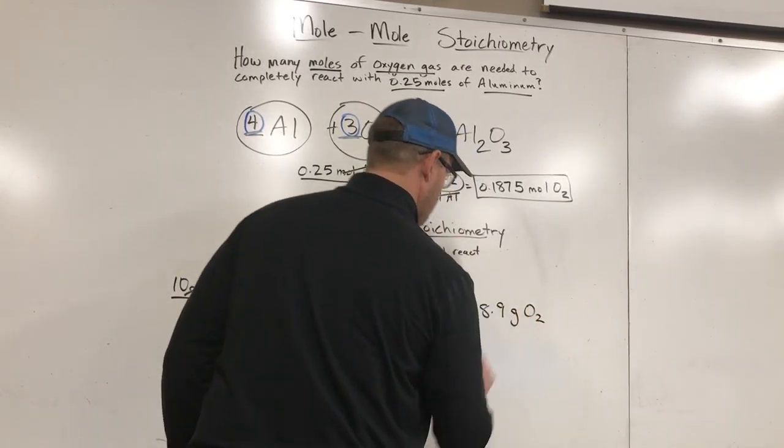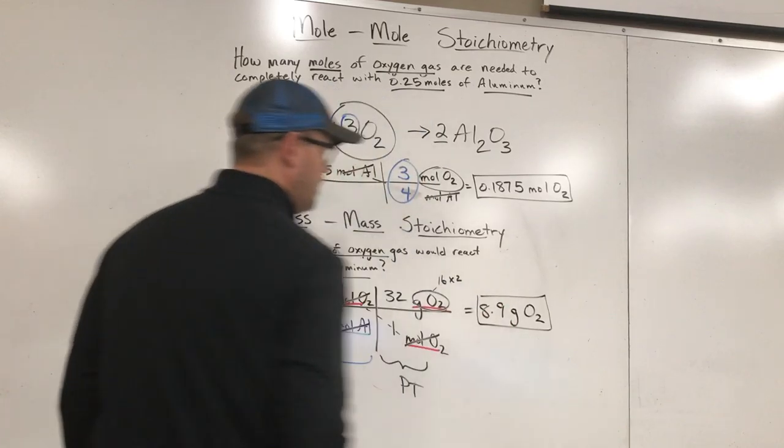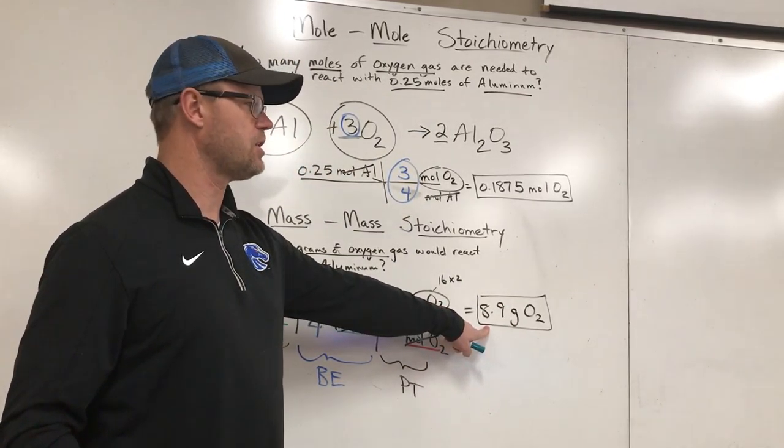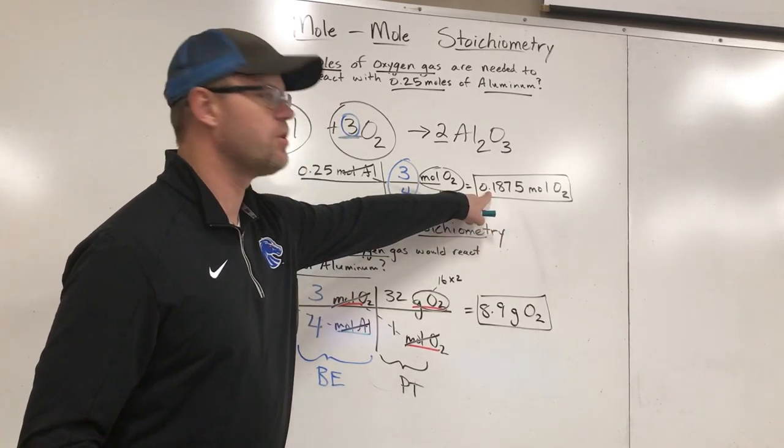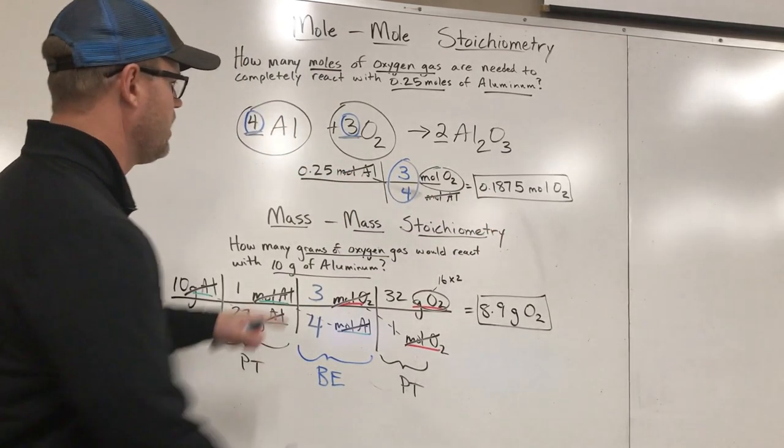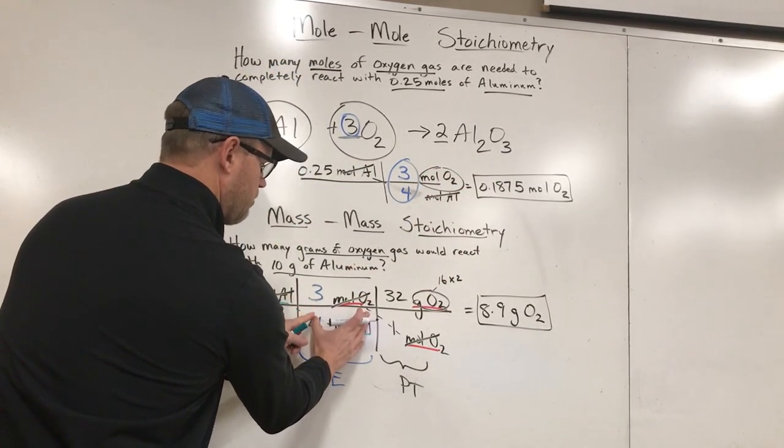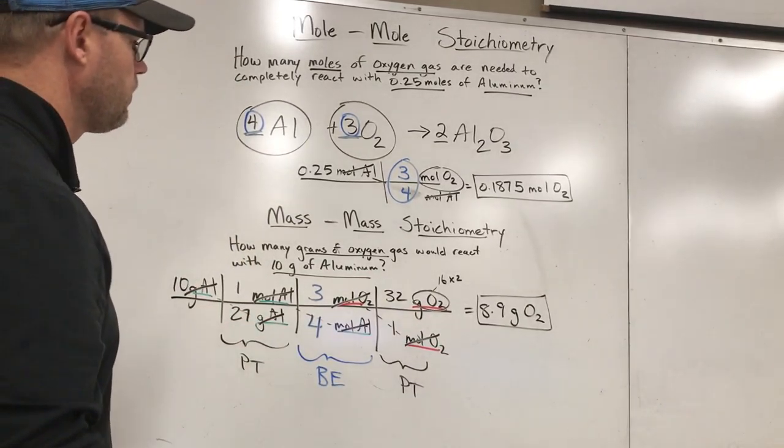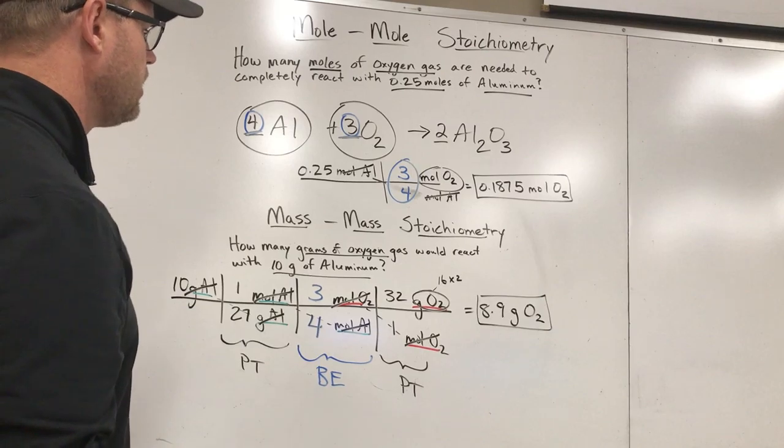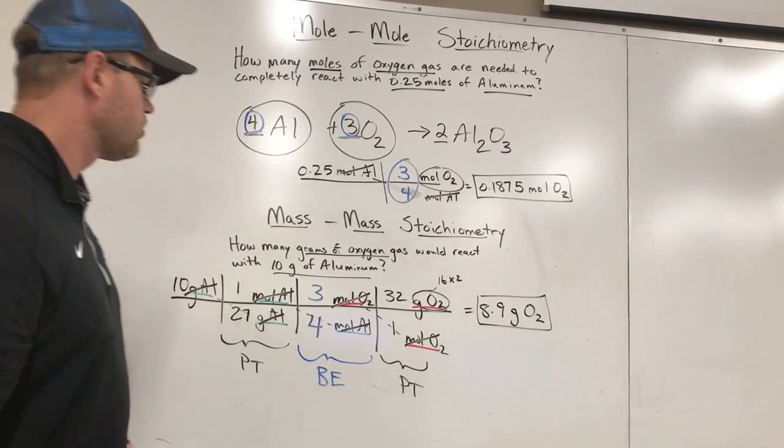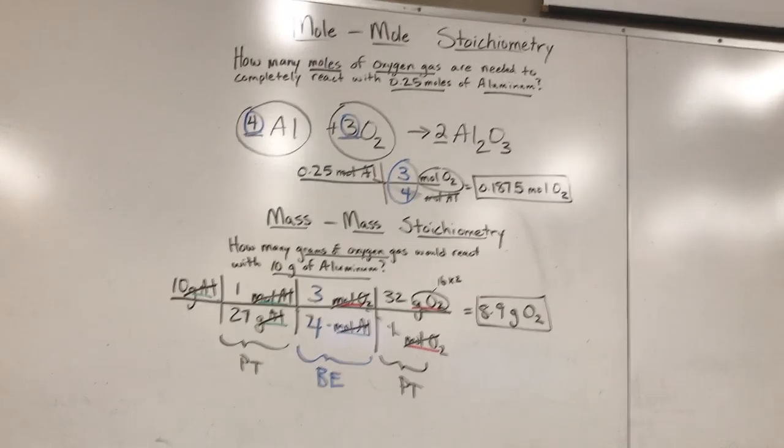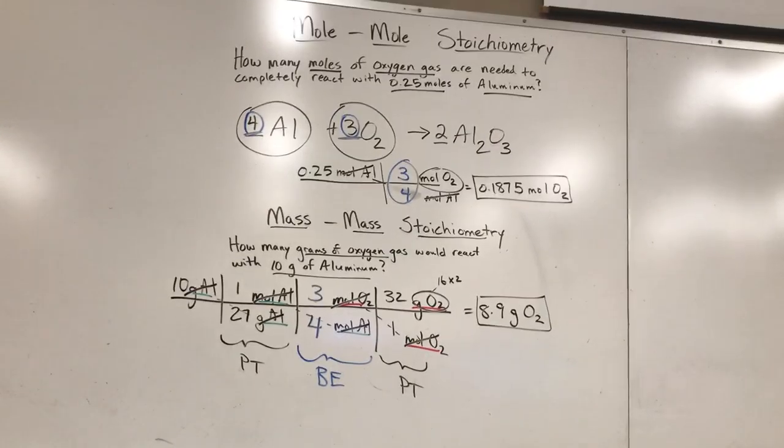Now, how do I calculate that? I multiply everything on the top and I divide by everything on the bottom. And when I punch all that in, I get a value of 8.9 grams of oxygen gas. Look how much more useful that is. I can actually go measure out 8.9 grams of oxygen to make this reaction happen. I have a hard time measuring moles. Moles is a key component. This problem is this middle step right here. But I really need some conversions on either end to turn it into something useful. And that's basically how you do mass-to-mass stoichiometry.